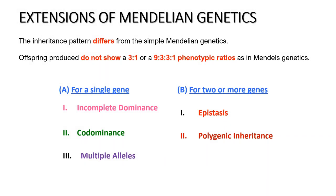In extensions of Mendelian genetics, the inheritance pattern differs from simple Mendelian genetics. Offspring produced at F2 do not show a 3 to 1 ratio for a single gene, nor will it show a 9:3:3:1 ratio for two or more genes as in Mendel's genetics.